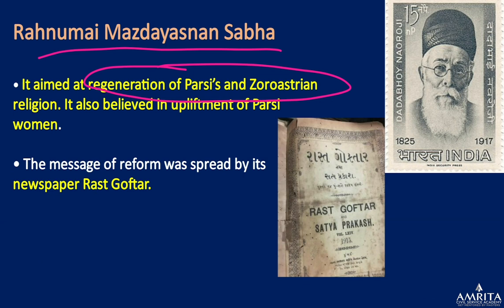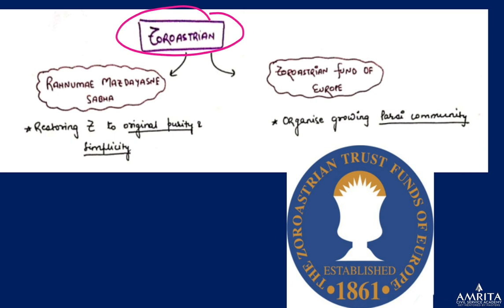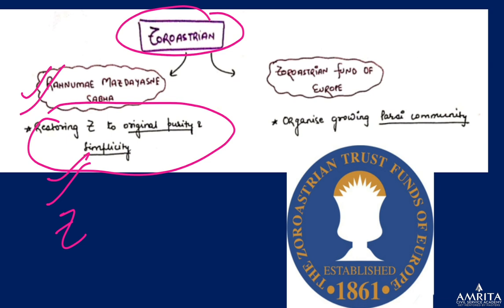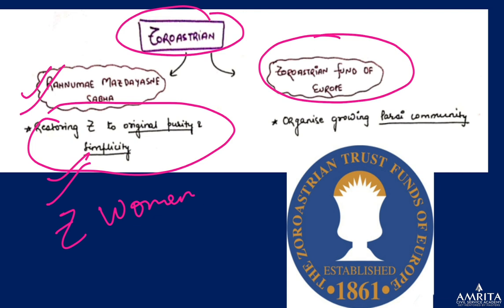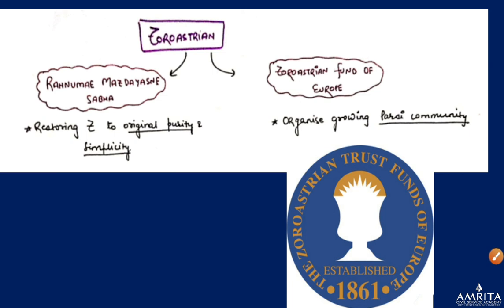The Rahnumai Mazdayasnan Sabha aimed at the regeneration of the Parsis and the Zoroastrian religion. He believed in the upliftment of Parsi women. His paper was called 'Rast Goftar.' In England, he established a Zoroastrian Fund of Europe to organize the growing Parsi community there — it has since developed into a full-fledged institution.